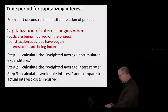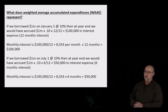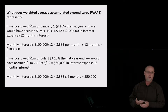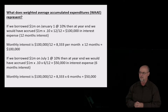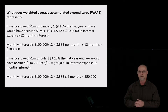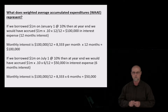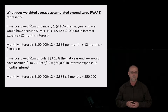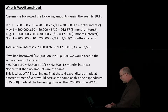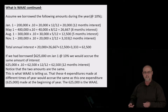Let's take a look at an example of what we mean by weighted average expenditures. If we borrow money on January 1st at 10%, then at the end of the year we would have accrued $100,000 interest. The same $1 million borrowed on July 1st at 10% would only accrue a half year's interest — $50,000. So you can see it's a function of time. Weighted average expenditures relates to how much time has passed with the various expenditures you've made, because expenditures made earlier in the year will accrue more interest than expenditures made later in the year.